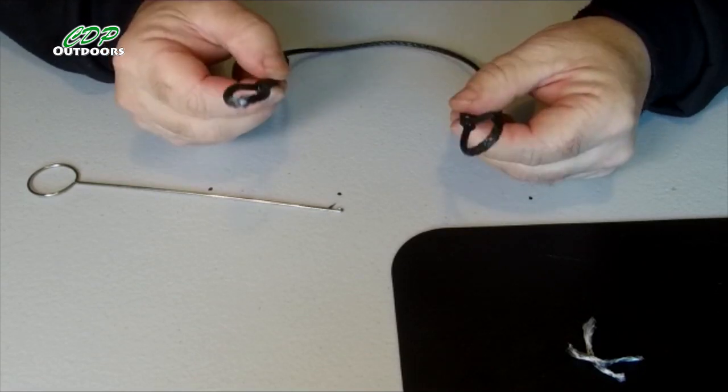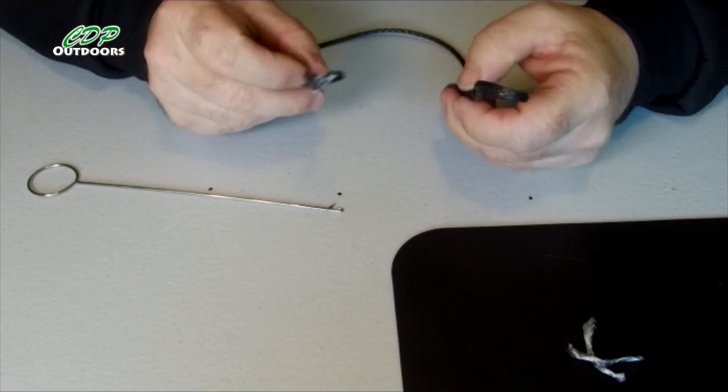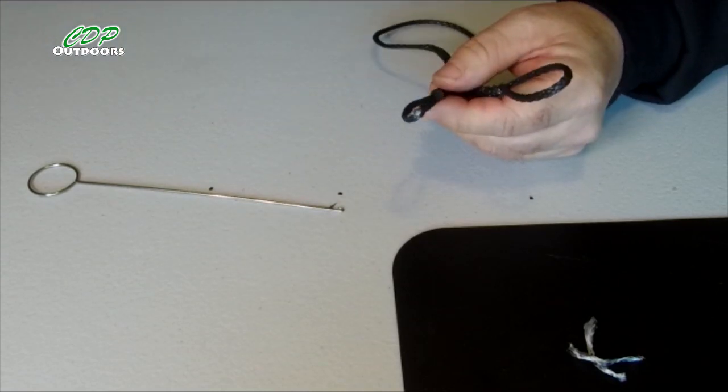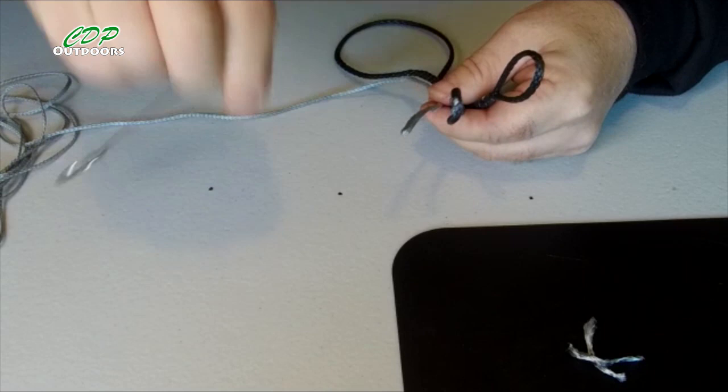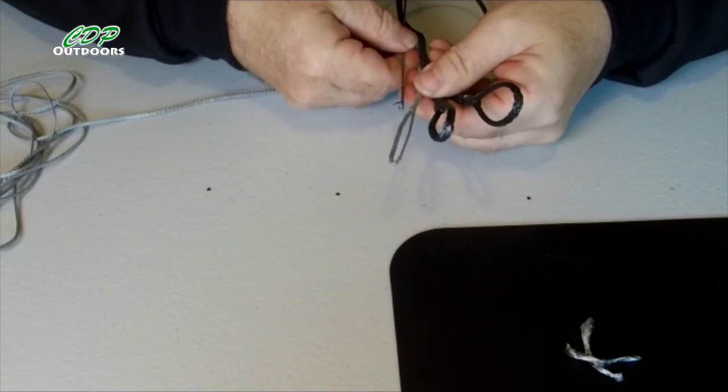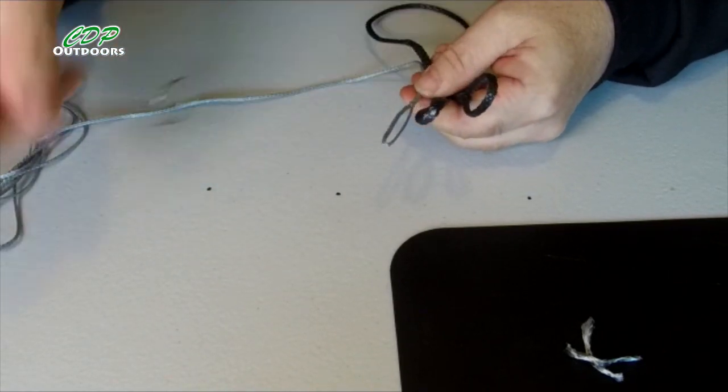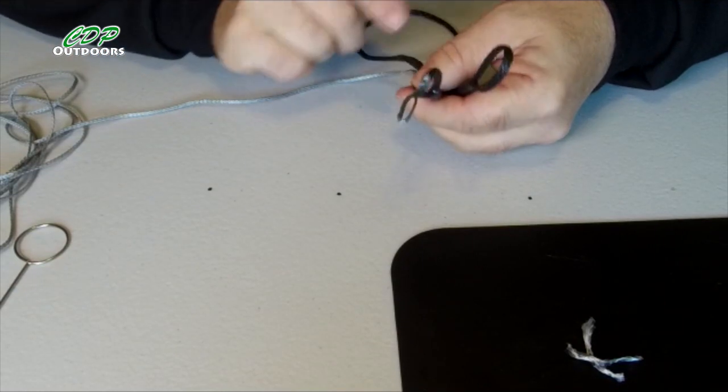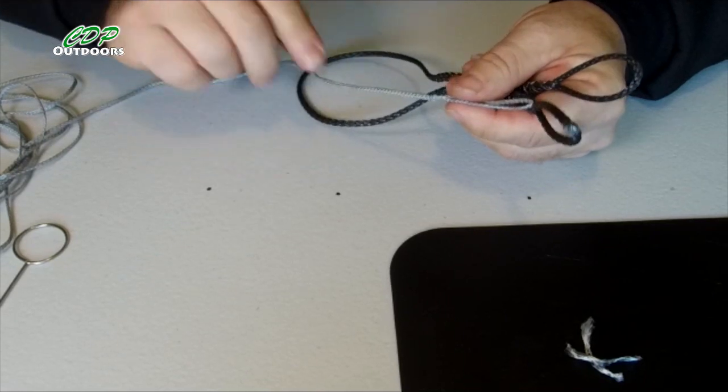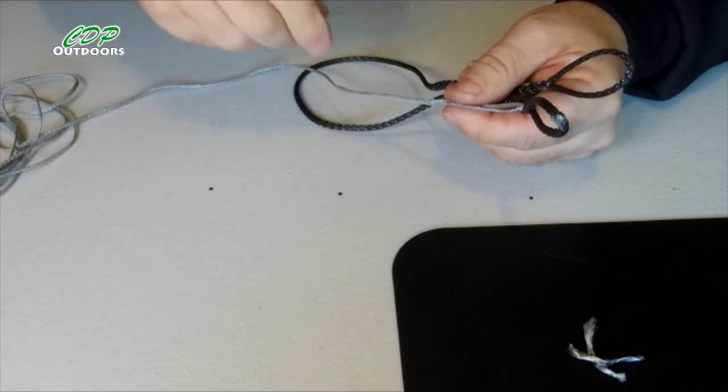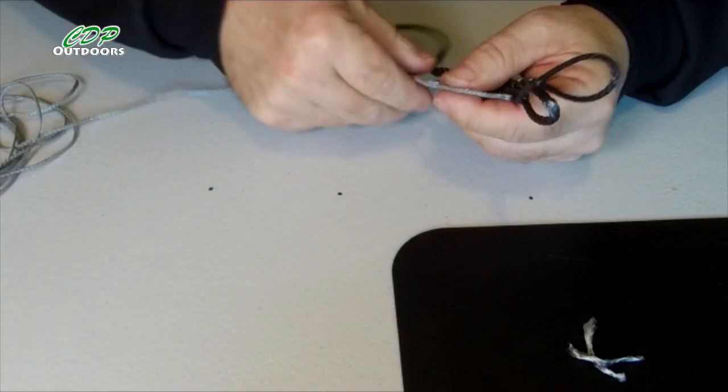The larger your dyneema cord, the easier that is to do. And as you can imagine, with something like this, working with a tool like this is very tight and fiddly. A lot of people use a piece of wire, doubled over, in the space of that, which does exactly the same job.